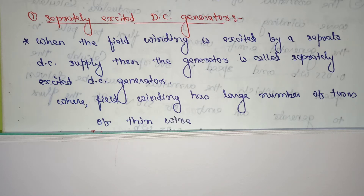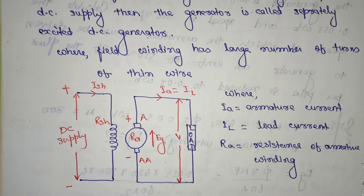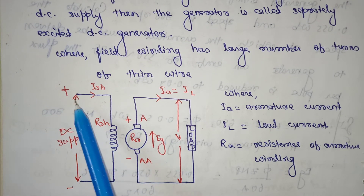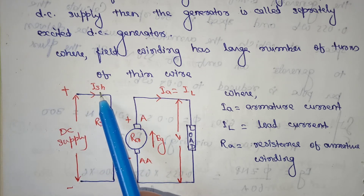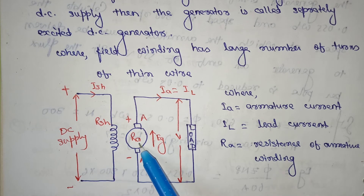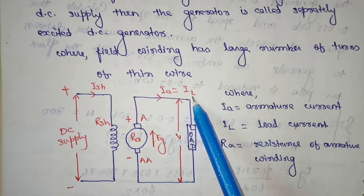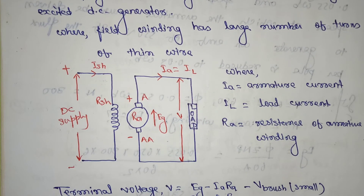The field winding has a large number of turns of thin wire. Let's see the diagram for the separately excited DC generator. In this diagram, we have the supply written with plus and minus. The circuit includes the shunt resistance, the armature resistance, the generated EMF, the terminal voltage, the armature current, and the load current.